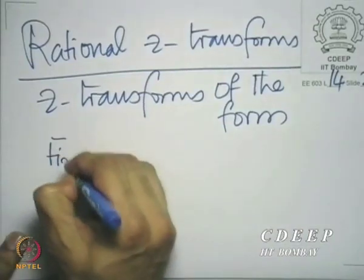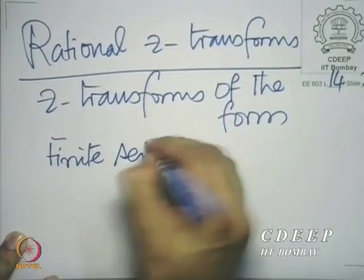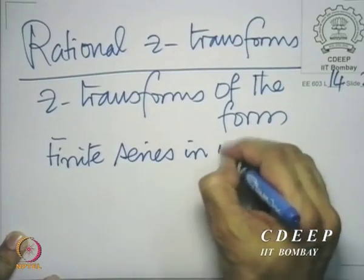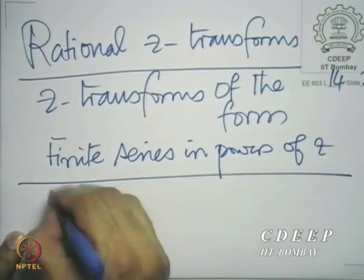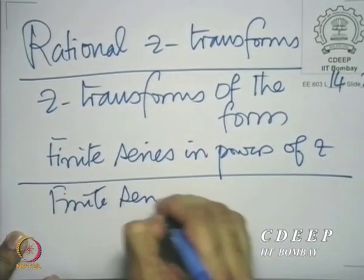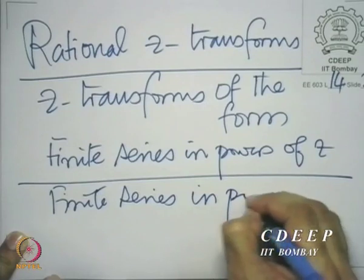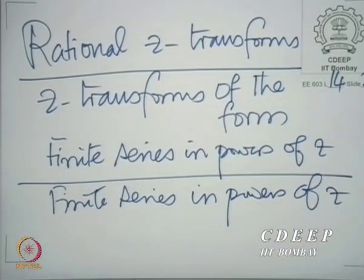Rational Z-transforms are Z-transforms of the form: a finite series in powers of z divided by a finite series in powers of z. There is a numerator and denominator, each of which are a finite series in powers of z — not infinite.